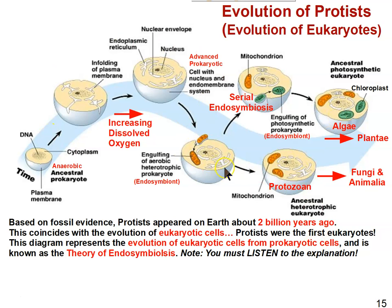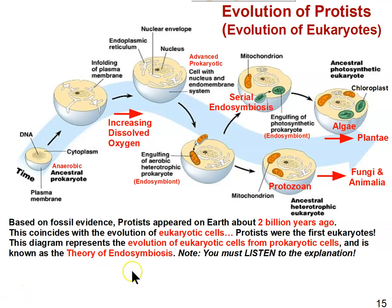This diagram represents the evolution of eukaryotic cells from prokaryotic cells. Eukaryotic cells came from prokaryotic cells. This is the theory of endosymbiosis, which we have investigated before. You should be familiar with it — this will jog your memory.